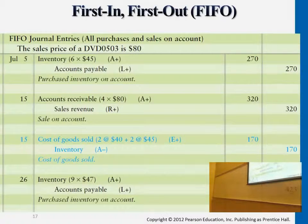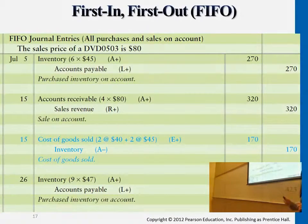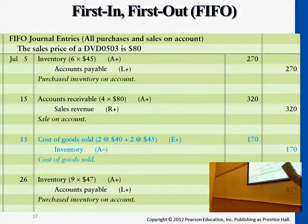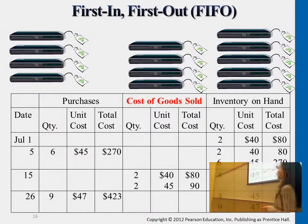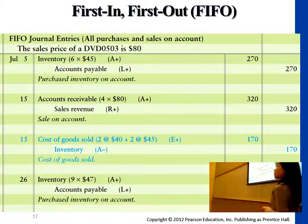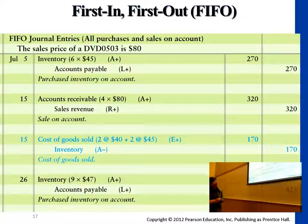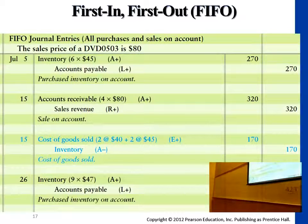The blue-shaded journal entry shows what we identified from the inventory record. The first transaction is purchasing inventory on account — $270. The middle two are the sales transactions: first at the retail price of $80 per DVD set, and second — the blue-shaded cost entry — two units at $40 and two at $45 for a total cost of $170. The last transaction is the additional purchase of nine DVD sets at $47 on account. This is how we assign cost of goods sold under first-in, first-out.